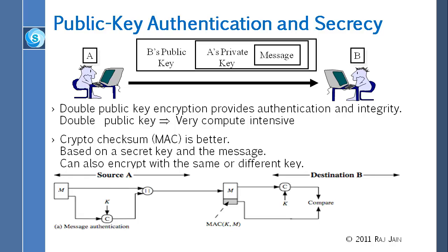If there is no secret key, this would simply be a message digest like MD5 — we just use the MD5 hash to protect files. Without a secret, anybody can calculate the MD5 hash. But if we want secrecy, the problem is that without a secret, anybody can modify both the message and the checksum. So we need a secret to ensure nobody else can modify the checksum.